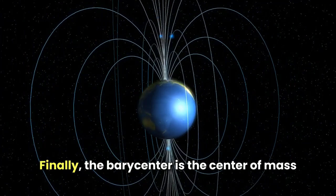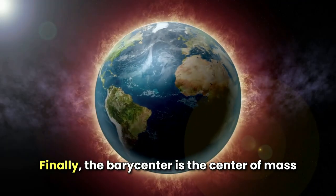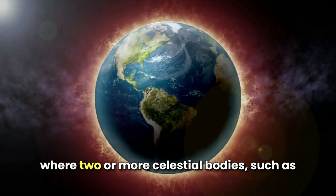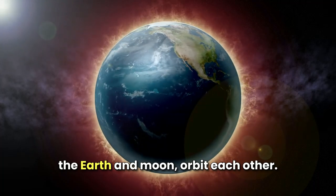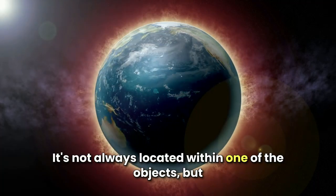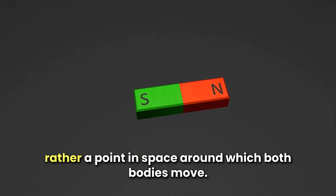Finally, the barycenter is the center of mass where two or more celestial bodies, such as the Earth and Moon, orbit each other. It's not always located within one of the objects, but rather a point in space around which both bodies move.